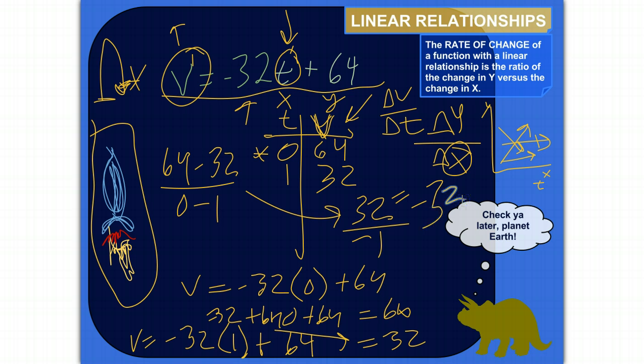And I didn't define units here. Let's say the velocity we'll define in feet per second, and the time we'll do seconds. So negative 32, the y is the feet per second, so negative 32 feet per second. And the x-axis variable is seconds. So the rate of change would be negative 32 feet per second, per second.